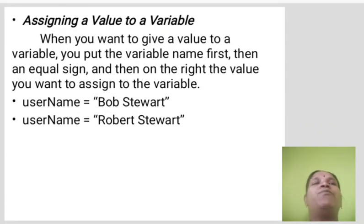Assigning a value to a variable: When you want to give a value to a variable, you put the variable name first, then an equal sign, and then the value you want to assign to the variable. userName equals "Bob Stewart".